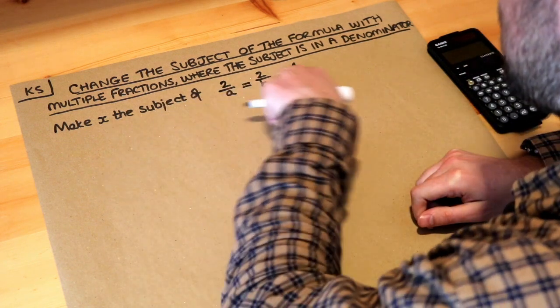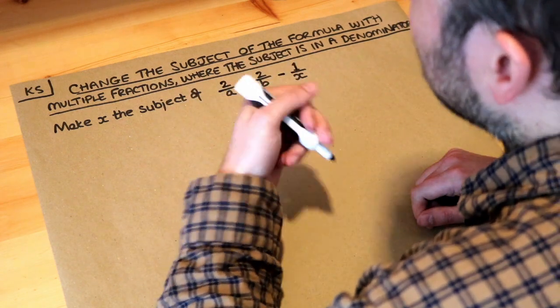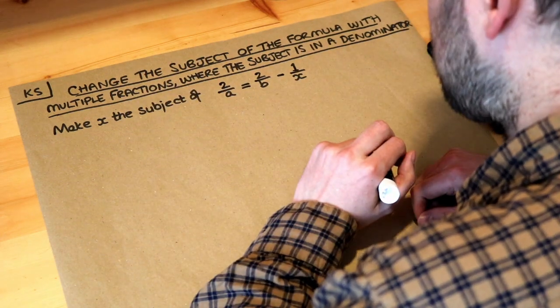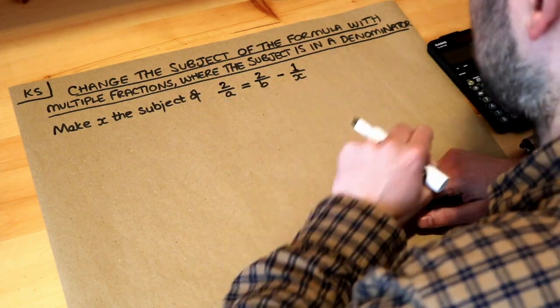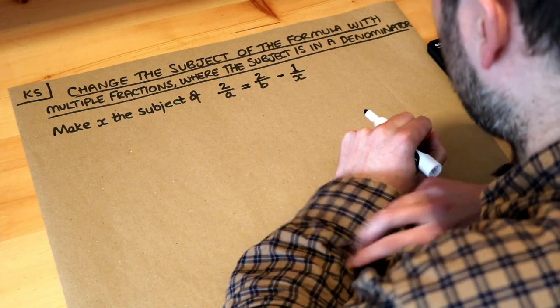So we want to make x the subject of this, and to make x the subject just means to get x on its own on one side of the equation, preferably the left side. Now this is quite complicated because we've got lots of fractions going on here and we need to get that x on its own on one side of the equation.